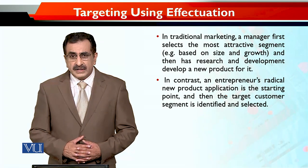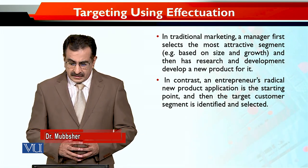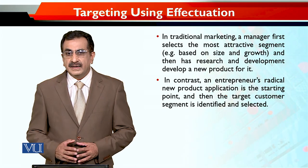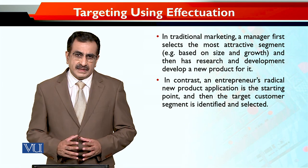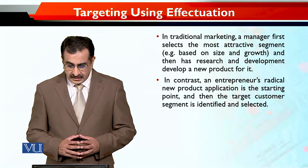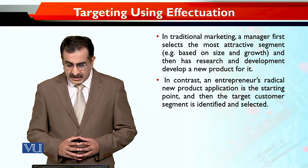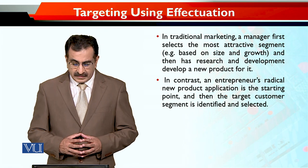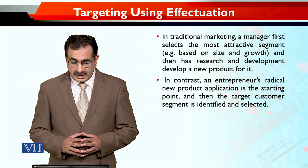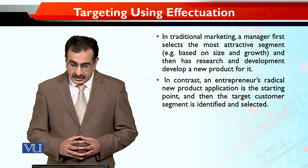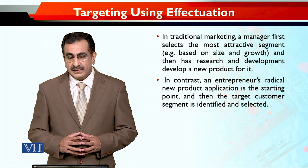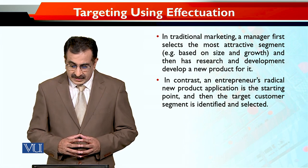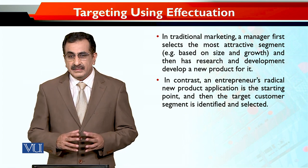In traditional marketing, a manager first selects the most attractive segment based on size and growth — which is a good market, a good number of people — and that segment will represent the majority of the market. Then research and development happens, and a new product is developed for that target customer segment.